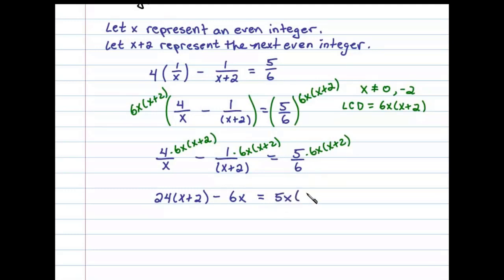What we're left with is a quadratic equation. Let's distribute and get this in standard form, in standard form equal to zero. So we have 24x + 48 - 6x = 5x² + 10x.